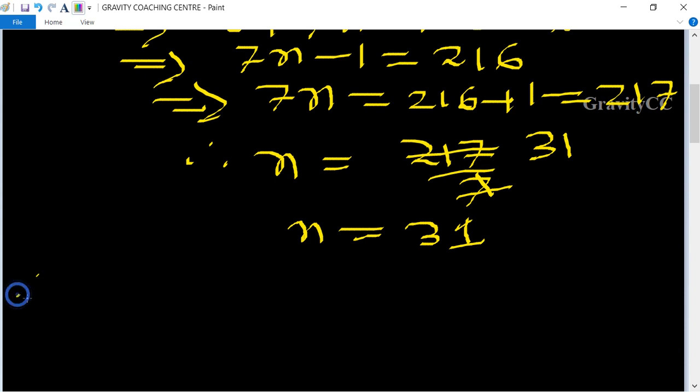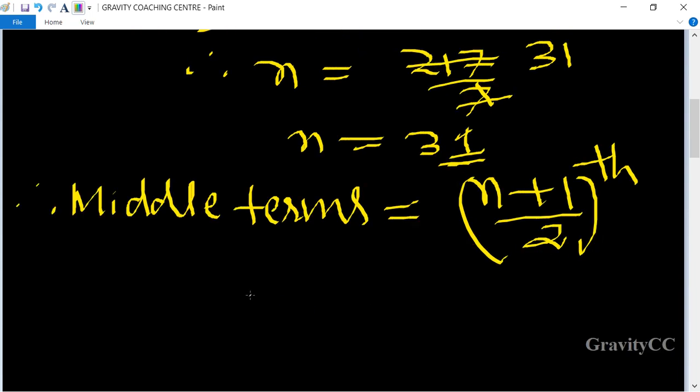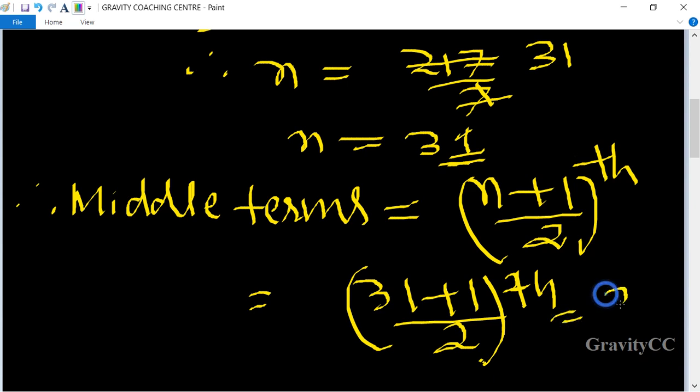The middle term, therefore middle terms equal to n plus 1 by 2th, because it is odd number of terms, so equal to 31 plus 1 by 2th, equal to 32 by 2th terms.